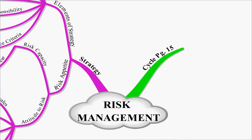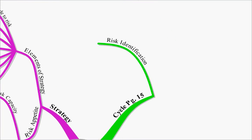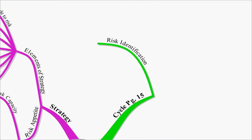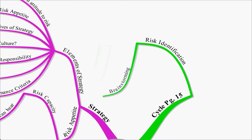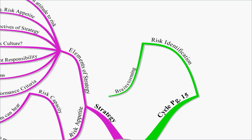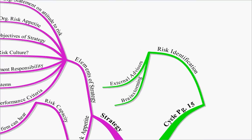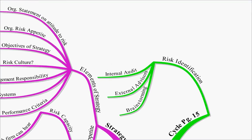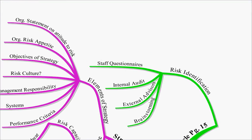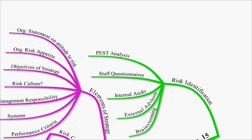The SEMA risk management cycle is on page 15 of your notes. The first thing you want to do is identify your risk. You may undertake a brainstorming session, get external advisors in to help, question internal audit, question the rest of your staff, hand out questionnaires and see what they think the risks this firm is facing are. You may also undertake a PEST analysis.